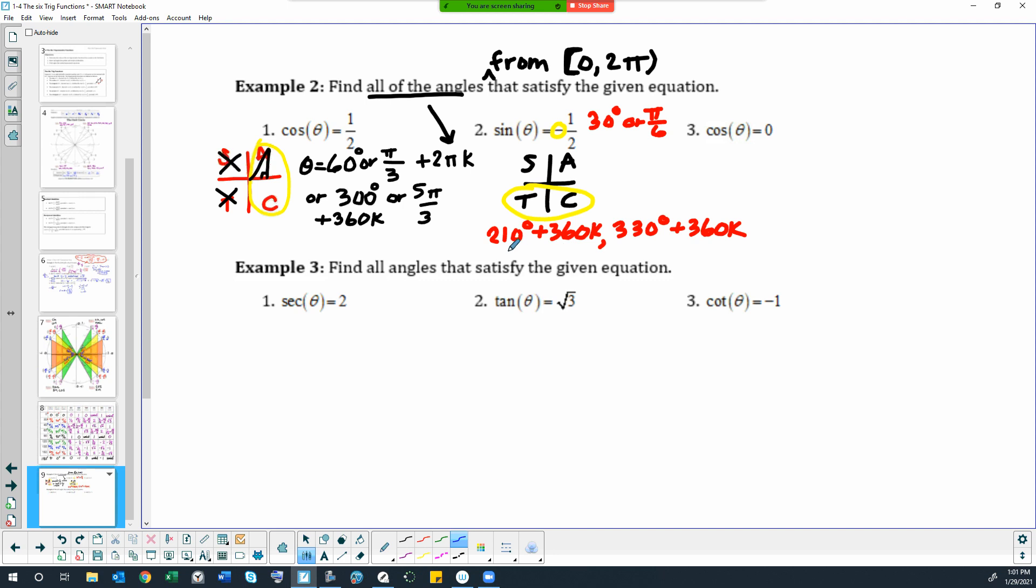And that would give us all possible angles, not just the ones from zero to two pi. If we want to do those in radians, it would be a pi six reference angle. So that would be seven pi six because that's more than pi, just barely. And then for the other one, we would do 11 pi six.